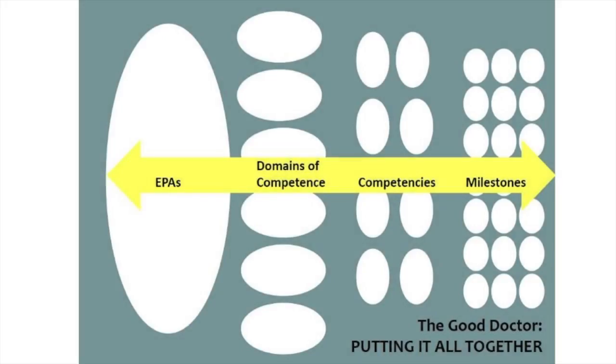So you have an EPA, and it maps to several domains of competence — one, two, three — and then within those domains to two or three competencies. Now remember, the competencies each have their milestones. Those are behavioral descriptors across the developmental continuum of performance on that competency. So each competency has a level one, the lowest level of performance, a level two, a level three, a level four, and a level five.